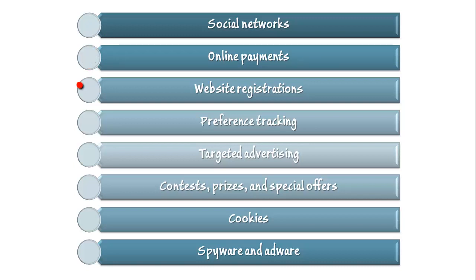With respect to website registrations, nearly every time a web user registers with a new website, she must supply at least some personal information such as her name, address, phone number, email address, birth date, and so forth. Websites may use this information for advertising purposes, data mining, or may simply sell it to the highest bidder. Many websites are increasingly asking for very private information in order to allow lost or forgotten passwords to be retrieved — such as the user's city of birth or her mother's maiden name — which is often the same information used by banks or government organizations to identify citizens. Consumers should carefully consider whether for-profit websites should also have this information.